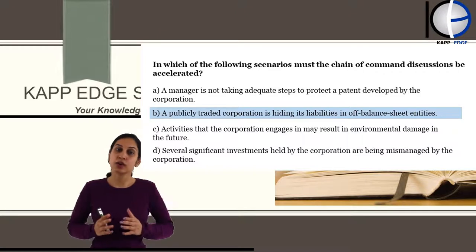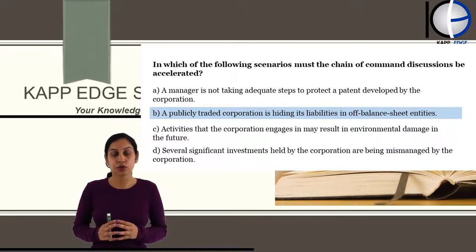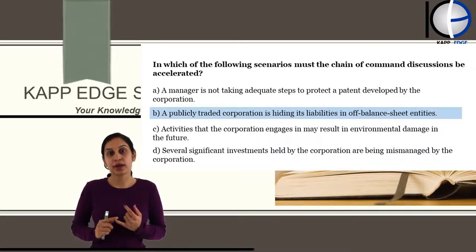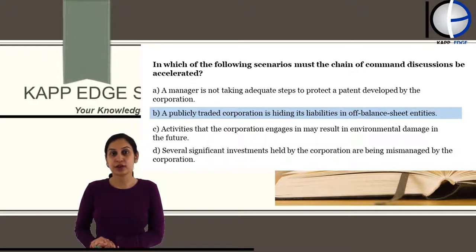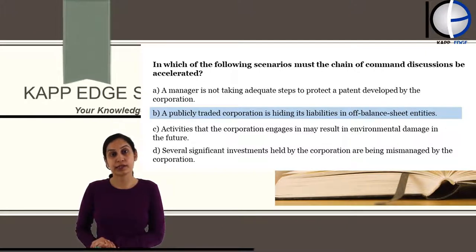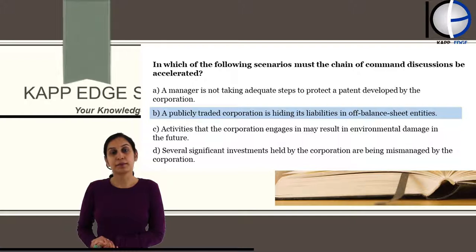It is assumed that the company was aware of the wrongdoing, and two things need to be proven: one, that the employee did something wrong in the course of business, and two, that the benefit was going to the corporation — directly or indirectly. That is what we call organizational crime. Even if management was not personally aware of it, it will be assumed that the company knew, because the benefit was flowing into the company. That's where imputed liability comes into picture.